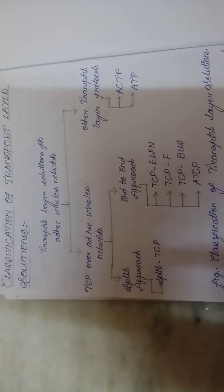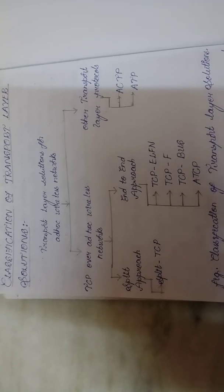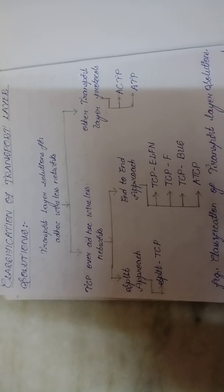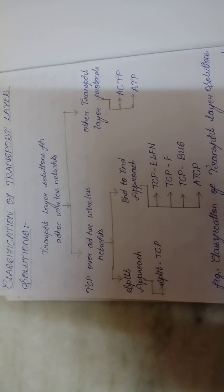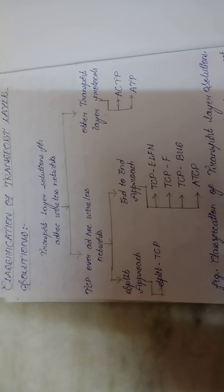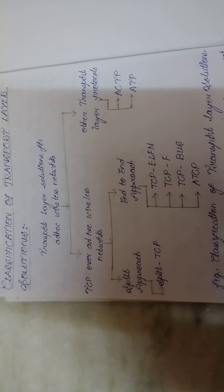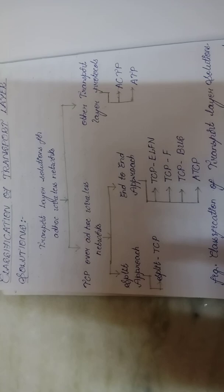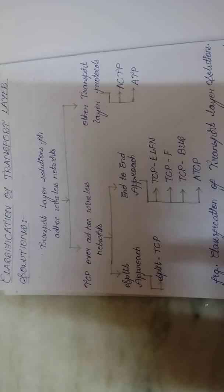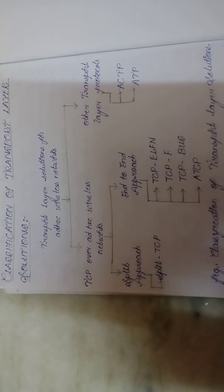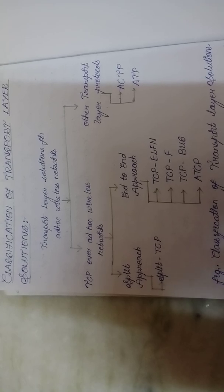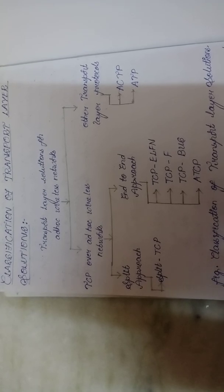The remaining end-to-end sub-classifications are: TCPF — feedback-based TCP; TCP-BUS — TCP with Buffering capability and sequence information; and ATCP — ad-hoc TCP.